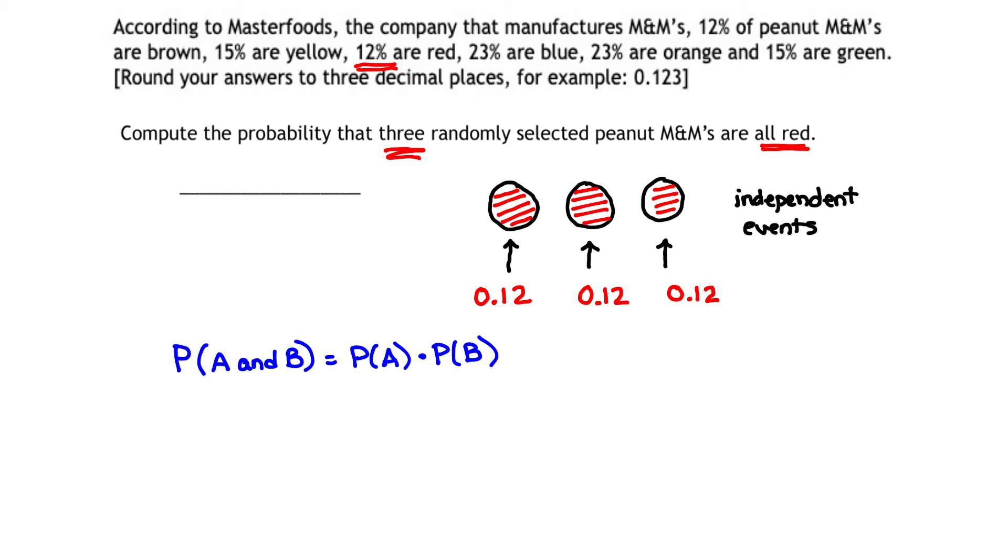What does that help us do? Well, that tells me that because the selection for each M&M is independent, if I want them to all occur, I can get the probability that all three occur by multiplying the probabilities of each of those independent events.